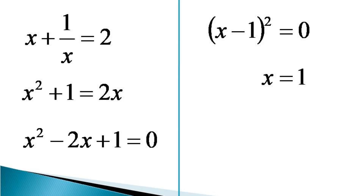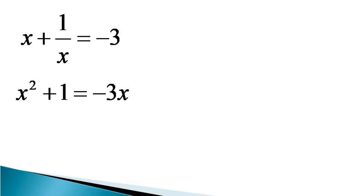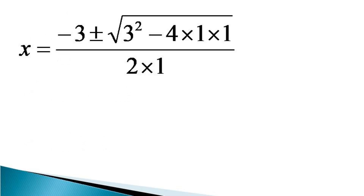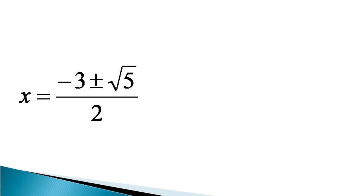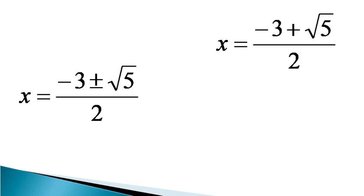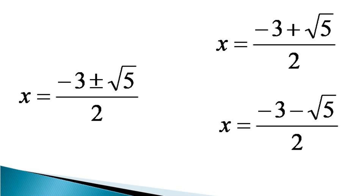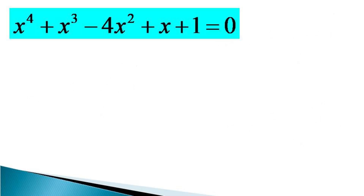Now we consider the second value, x plus 1/x equals minus 3. Multiplying both sides by x gives x squared plus 1 equals minus 3x, and bringing all terms to the left hand side gives x squared plus 3x plus 1 equals 0. Using the quadratic formula: x equals minus 3 plus or minus under root of 3 squared minus 4 times 1 times 1, all divided by 2 times 1. This simplifies to x equals minus 3 plus or minus root 5, all divided by 2, giving two values: x equals (minus 3 plus root 5)/2 and x equals (minus 3 minus root 5)/2.